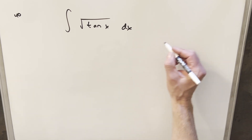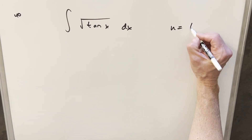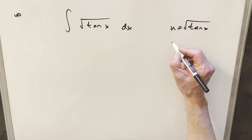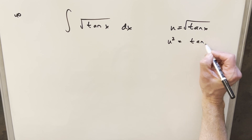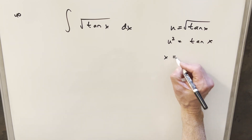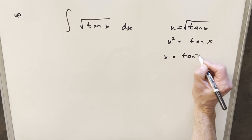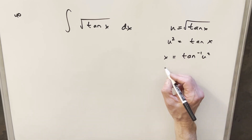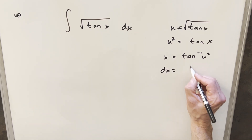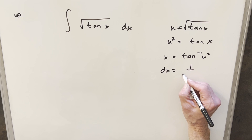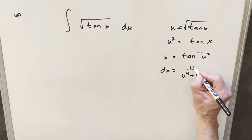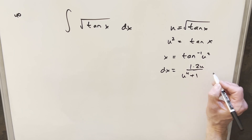What I want to do to get started with this, I'm going to do a u substitution. I want to make my u basically the whole thing: square root of tan x. We'll square both sides and we'll have u squared equals tan x. If I take arctan on both sides, I can isolate x and write this as x equals arctan of u squared. Then we'll go ahead and take a derivative, so we'll find our dx value. The derivative is going to be 1 over u to the 4th plus 1, and then we need the chain rule, which gives me a 2u in the numerator du.